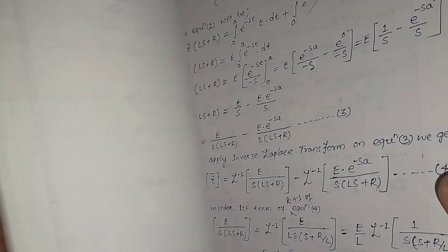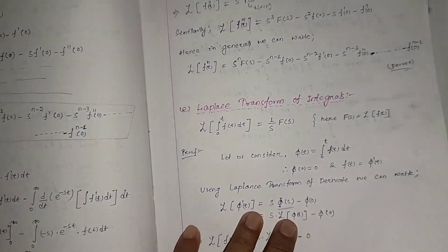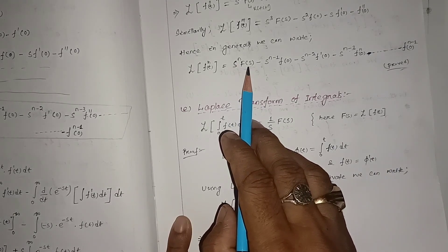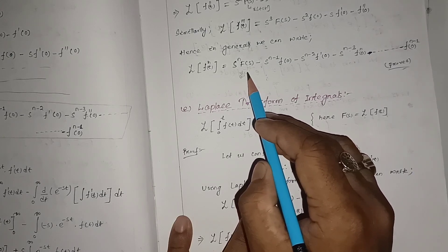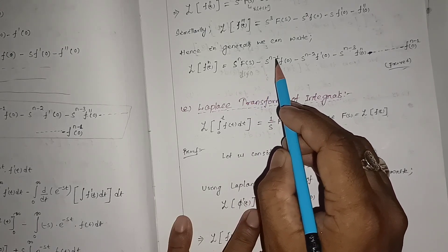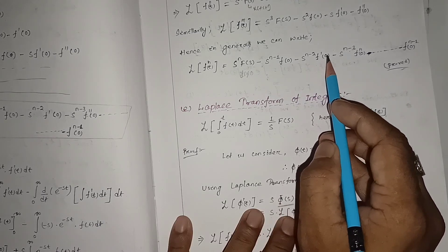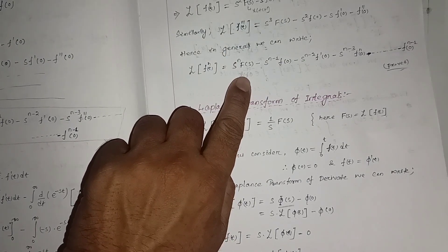Recalling the general formula: the Laplace transform of the nth derivative is s^n F(s) − s^(n−1) f(0) − s^(n−2) f'(0) − … and so on. For n = 2, this becomes s² F(s) − s·f(0) − f'(0), giving us three terms.